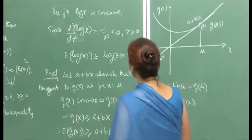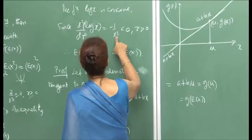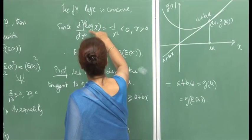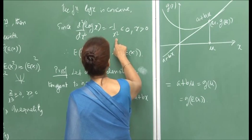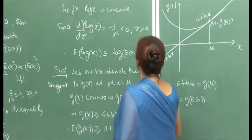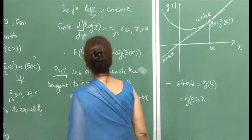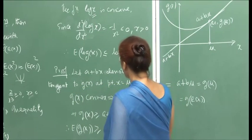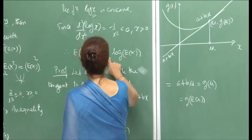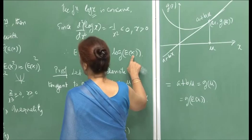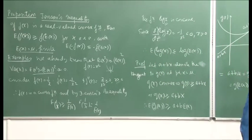Consider the function log(x). The first derivative is 1/x, so the second derivative is −1/x², which is less than 0 for x > 0. Therefore log(x) is a concave function defined for x positive. By Jensen's inequality, E[log(X)] ≤ log(E[X]), because for concave functions the inequality reverses.